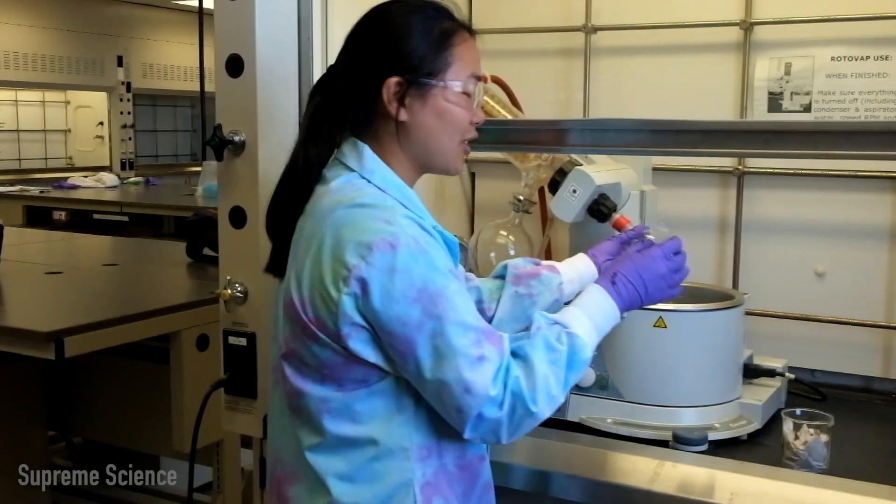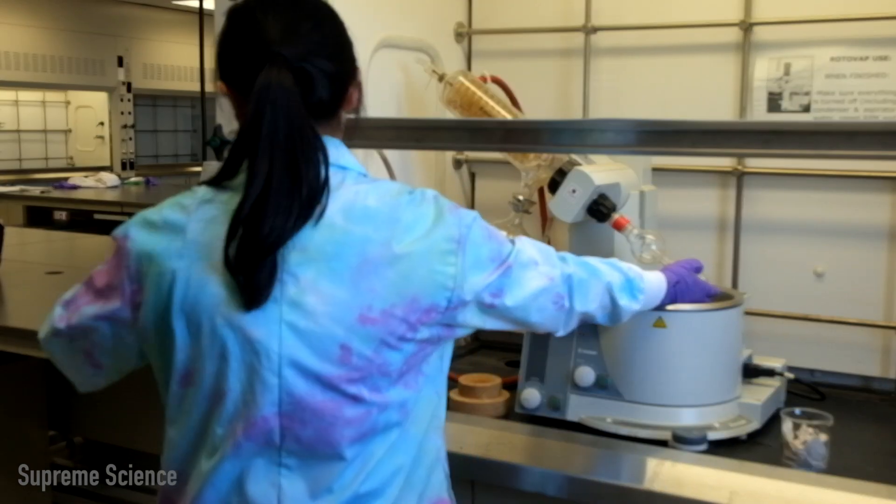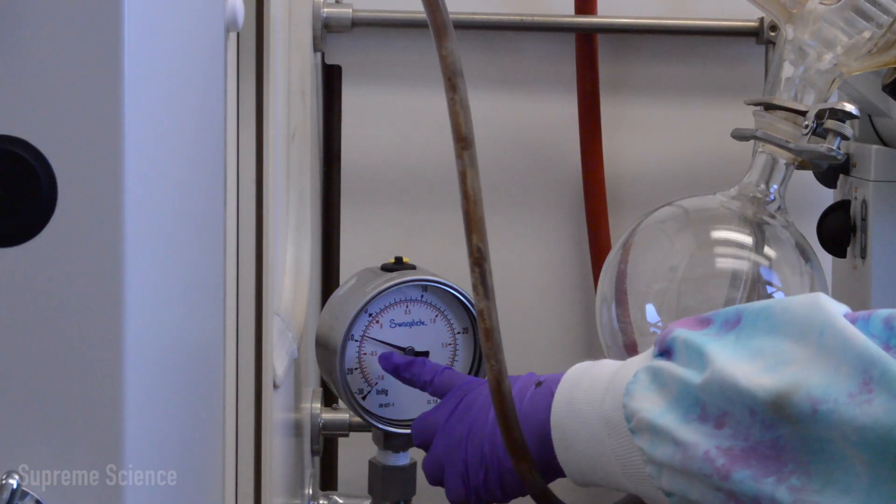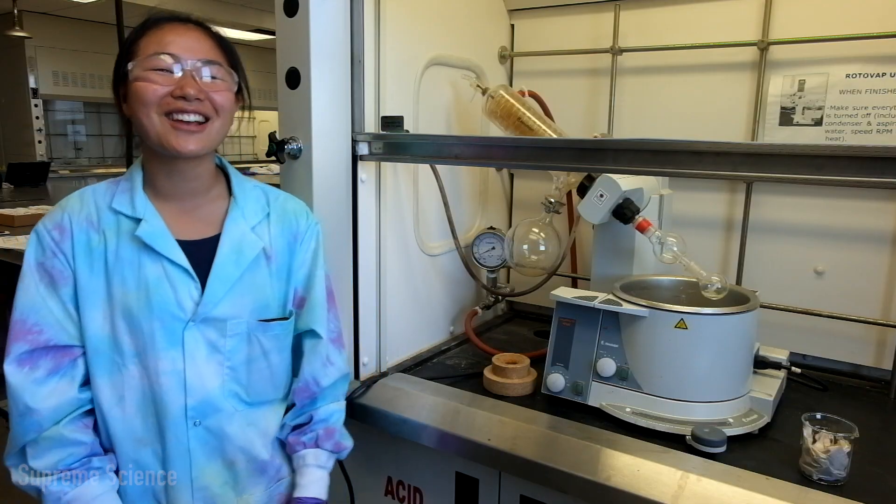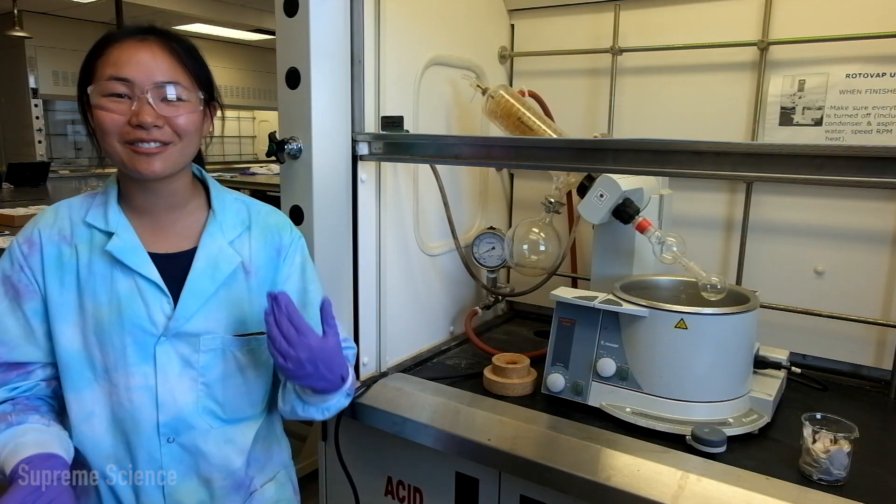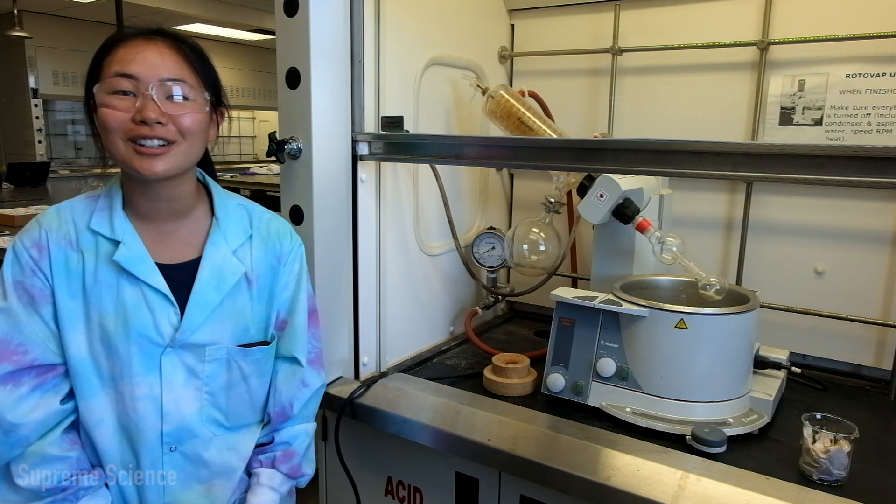And then you take your round bottom flask with your solution. And then you turn your vacuum on. Once it gets to minus 10, you can turn your rotation on. If you wait too long to start your rotation, you run the risk of your solution bumping into your splash trap and losing some of your product.